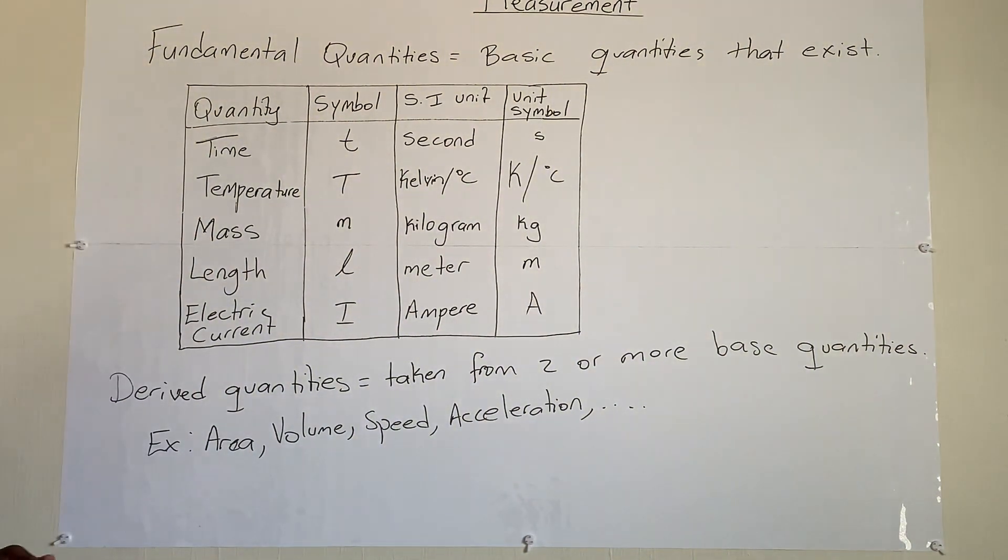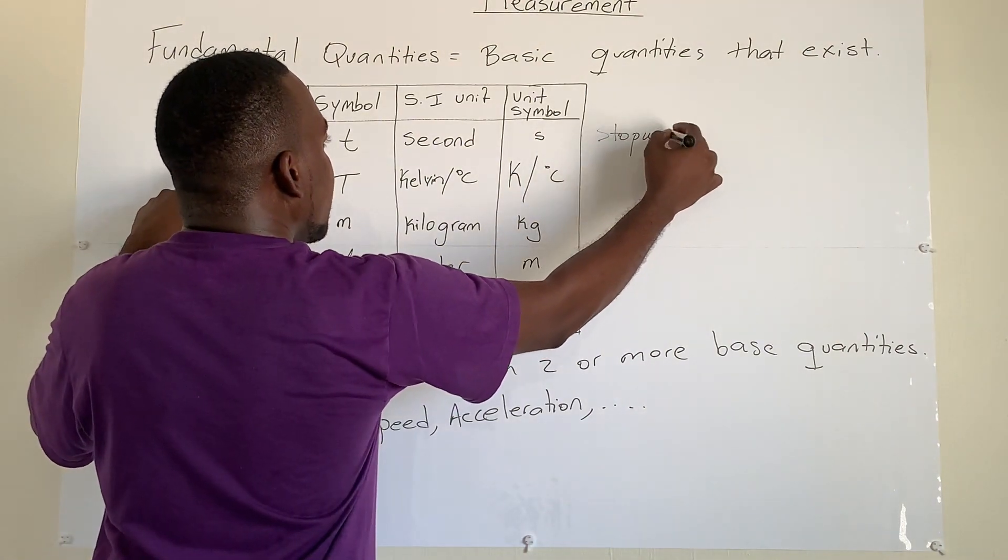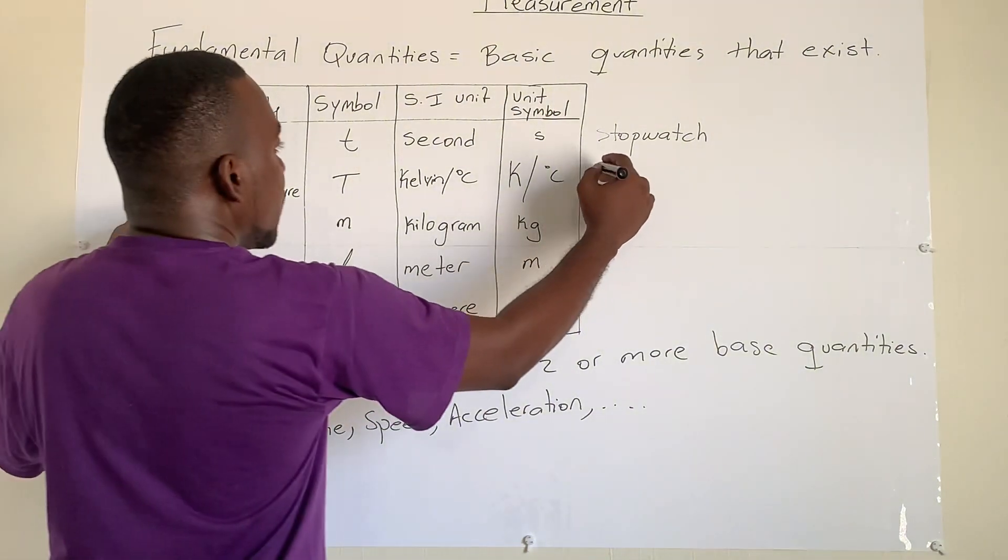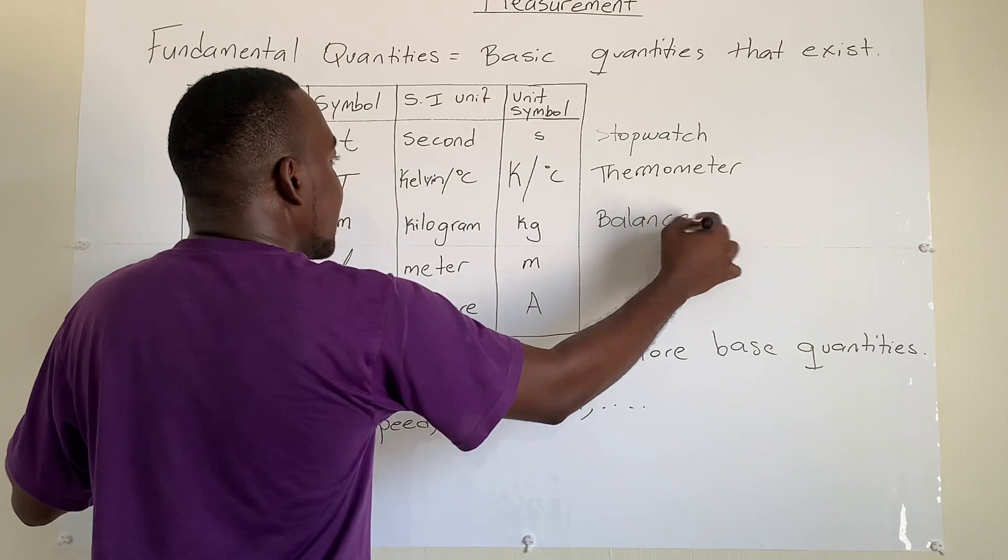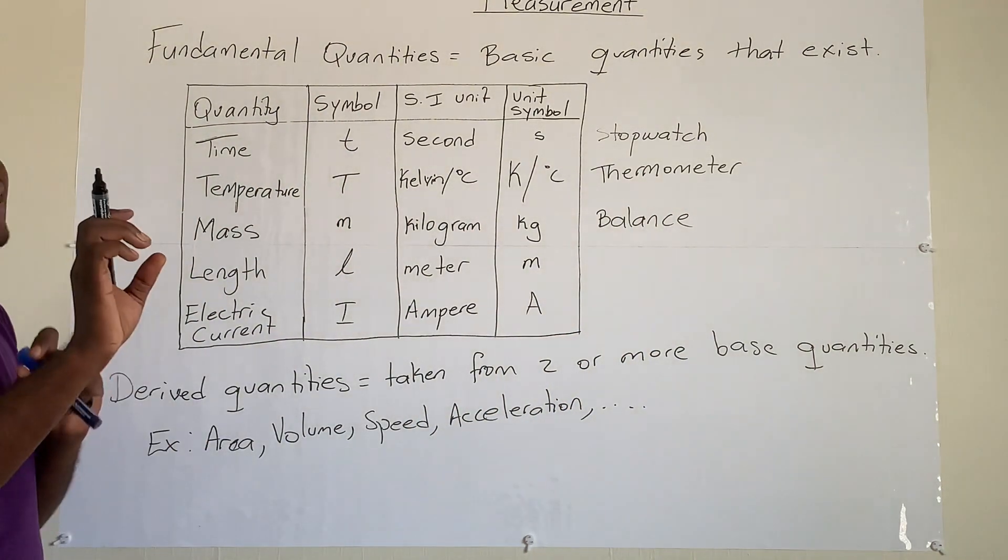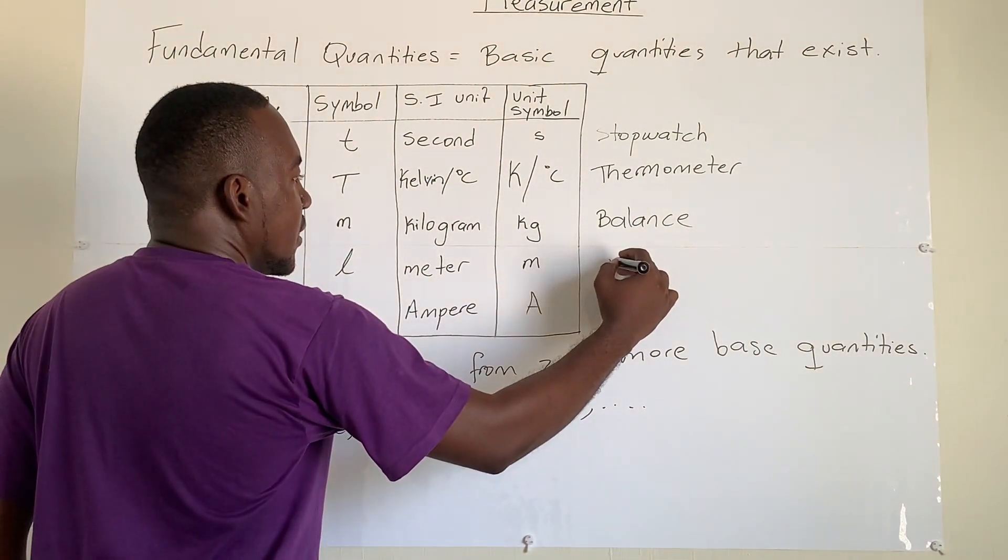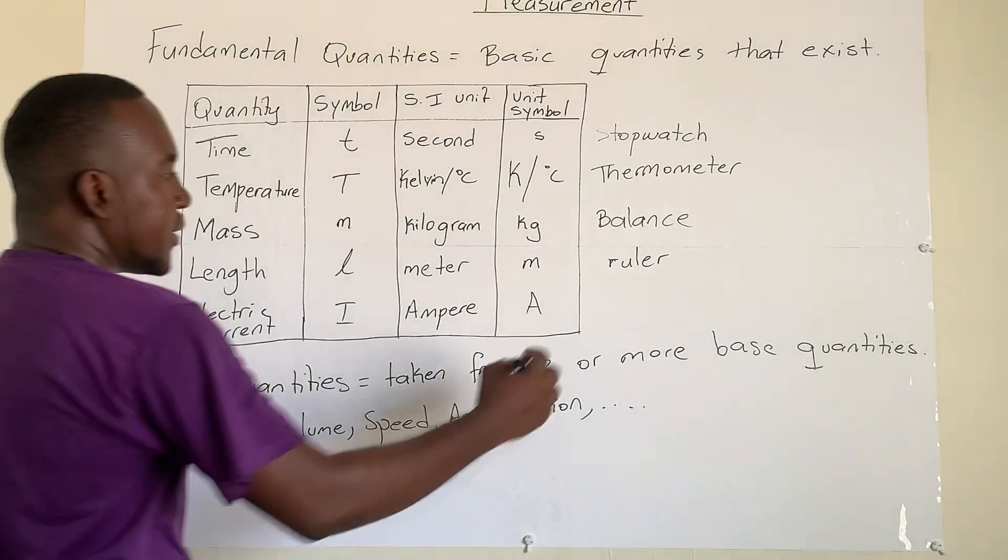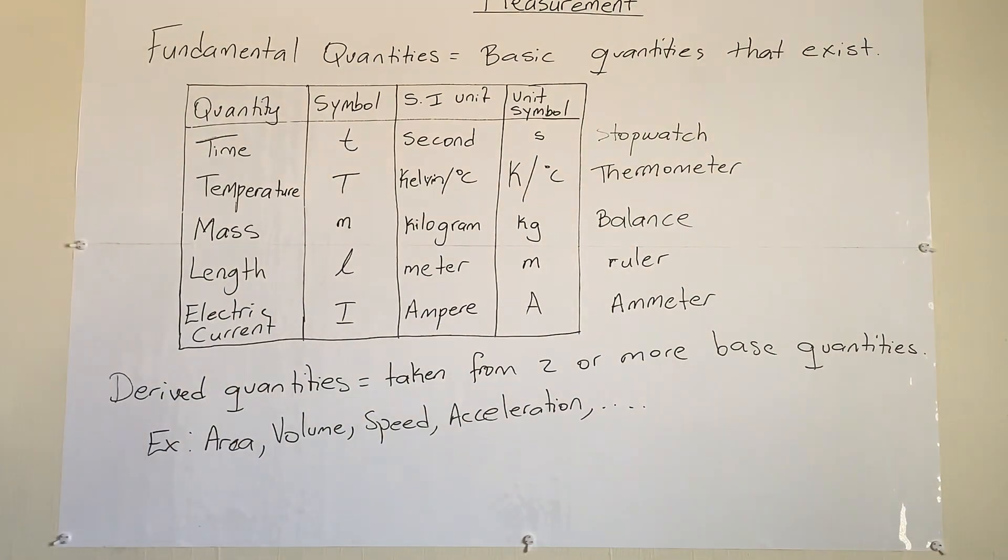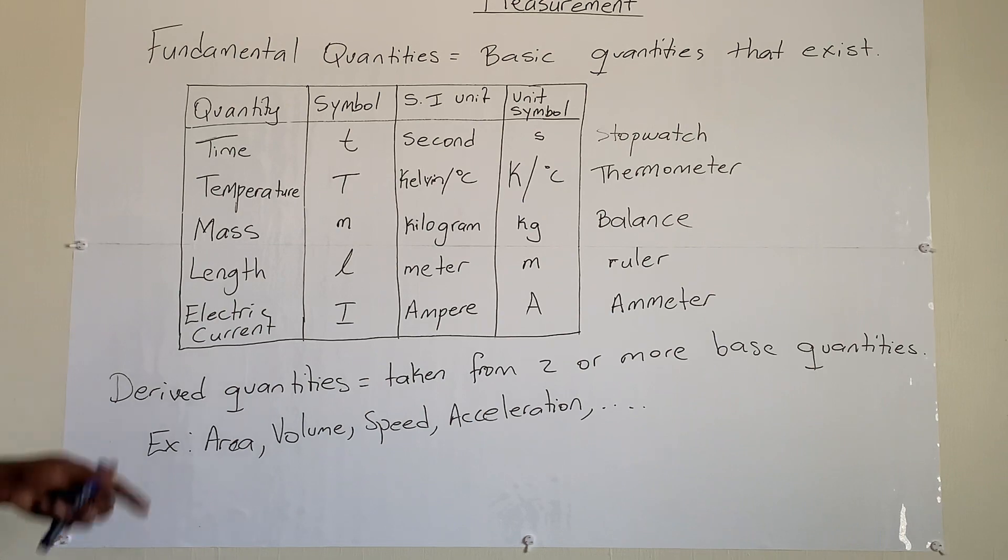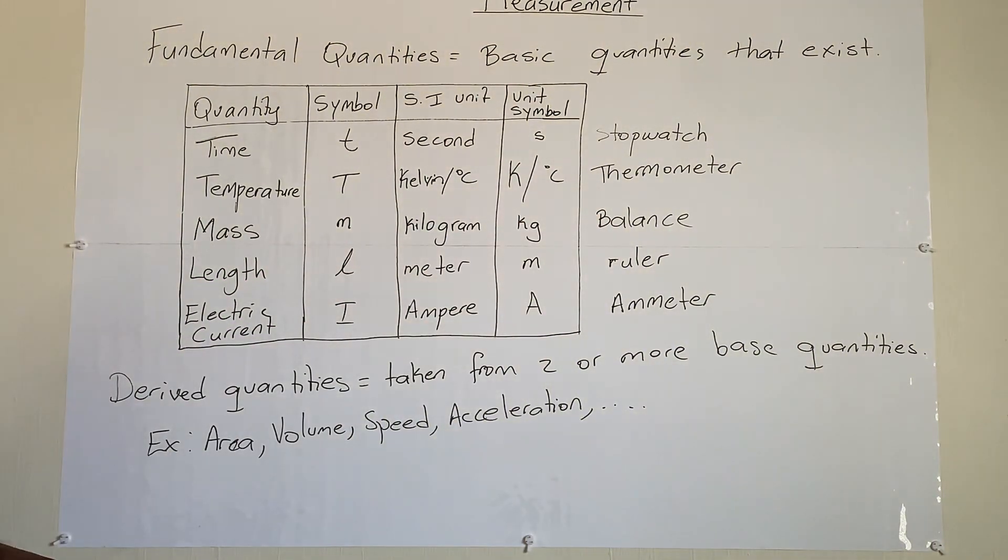So we know the instrument used to measure time would be a stopwatch. Use a stopwatch to measure time. For temperature, would be a thermometer. And for mass, we know persons normally call this a scale. The correct term is a balance. The scales are the markings on the instruments. So for mass, we use a balance to record the value. Then we have length, use a ruler. And finally, electric current, we use an ammeter. So these derived quantities will also have instruments that measure them. But for this purpose, we only focus a lot on our fundamentals and what devices or instruments we use to measure them.